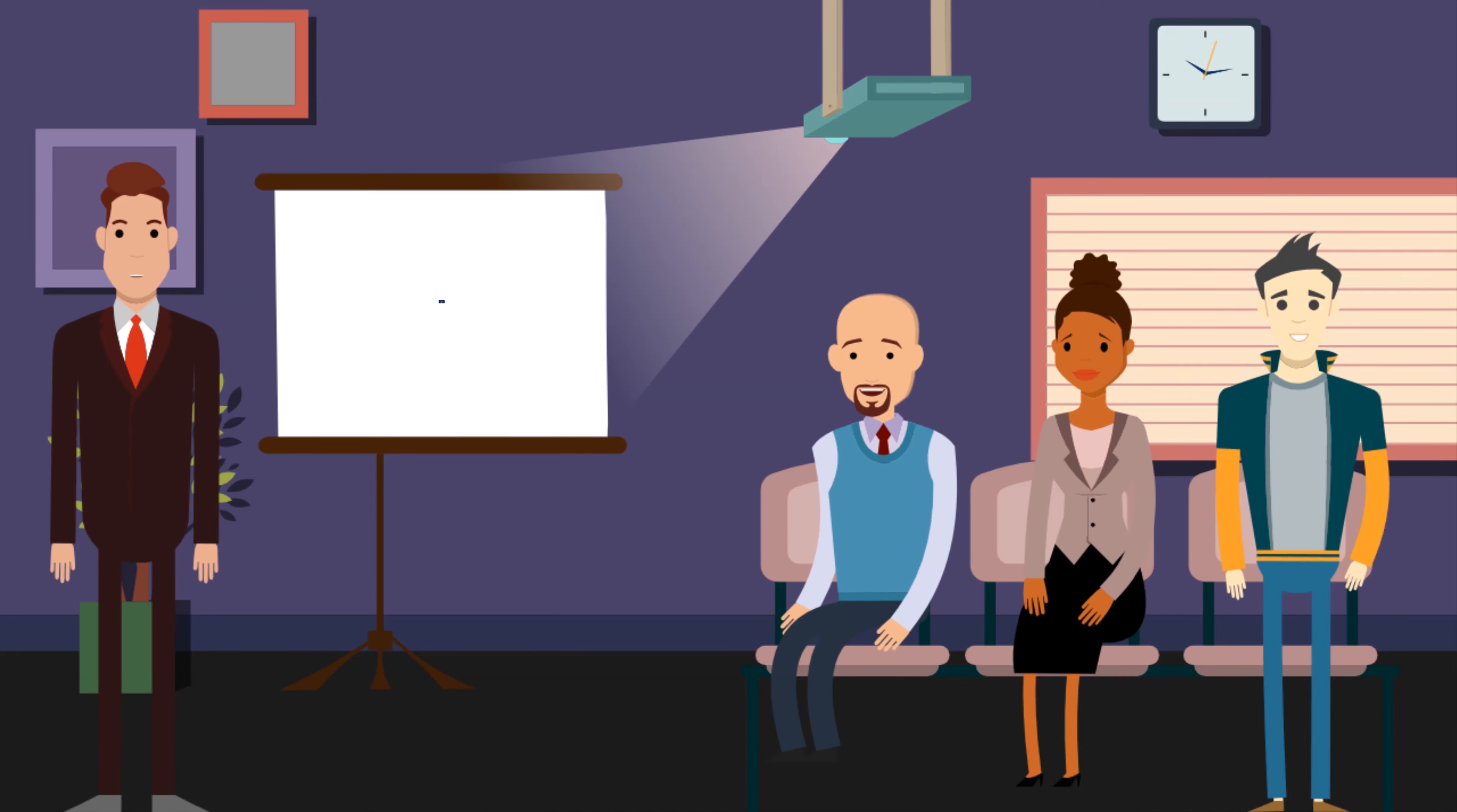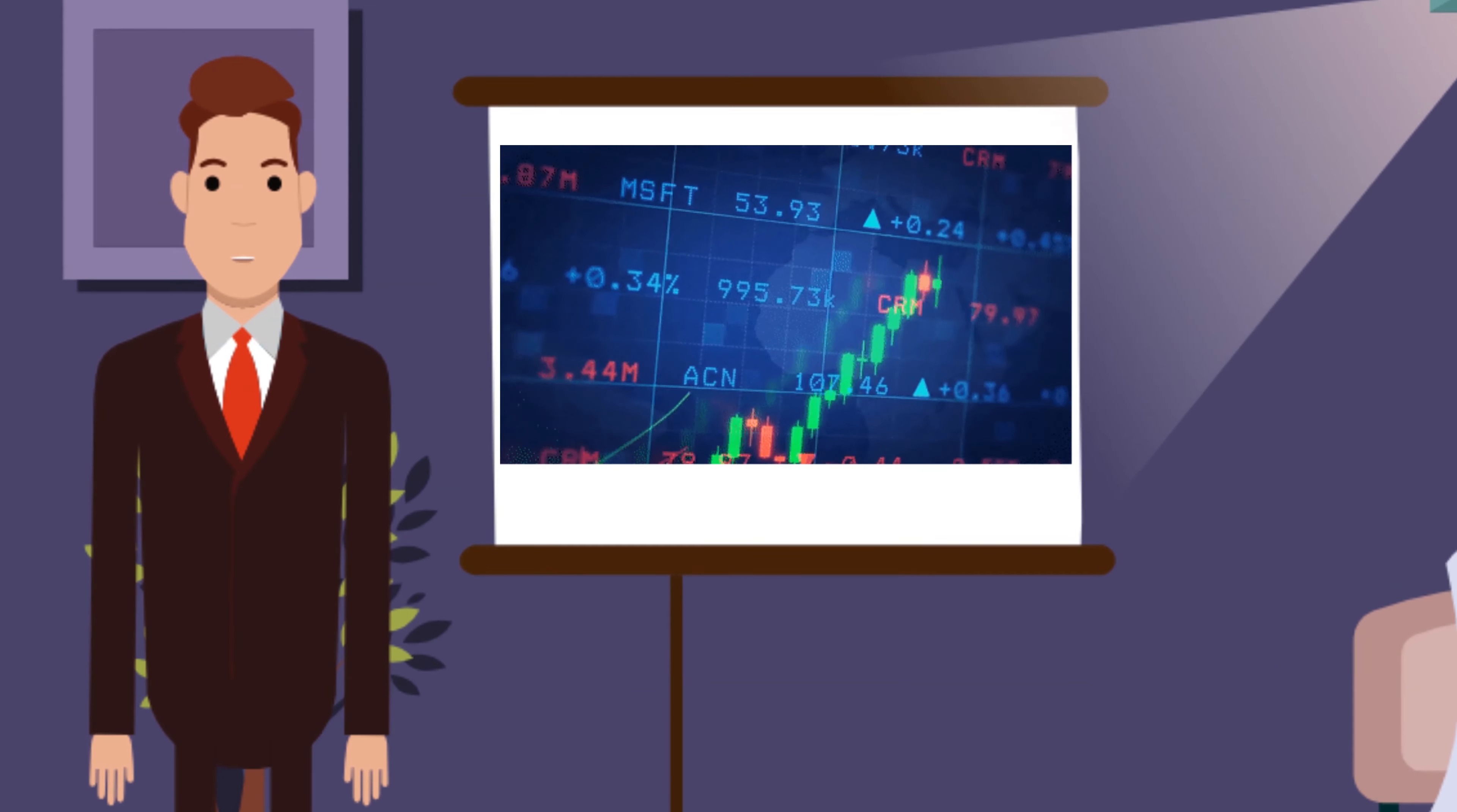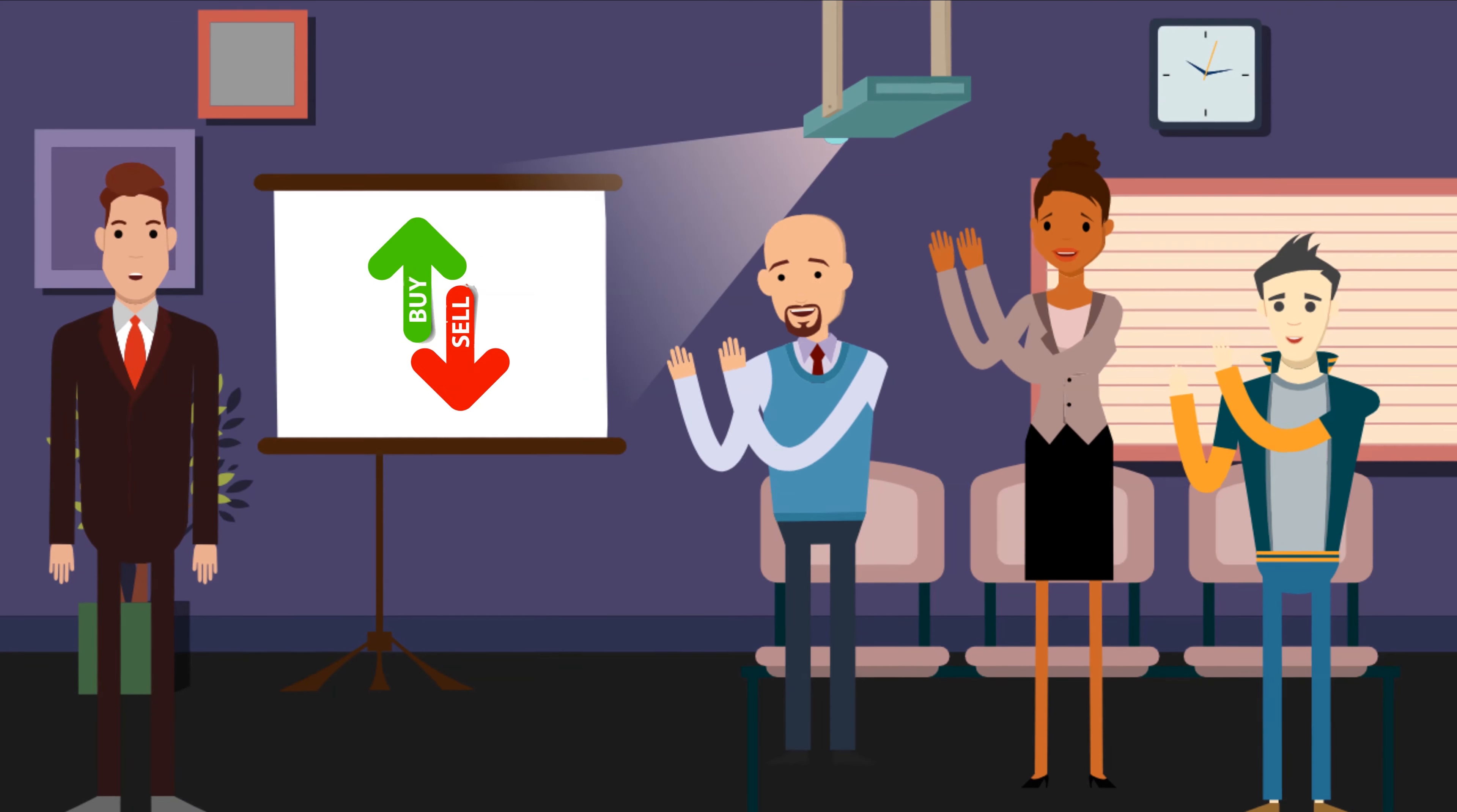So what is unique about this indicator? Well, this indicator is a combination of open interest data and volume along with multiple other indicators such as RSI, MACD, Ichimoku Cloud, which gives you a ready-made high-accuracy buy and sell signal.